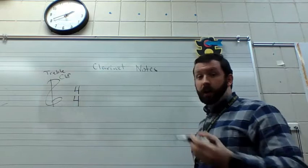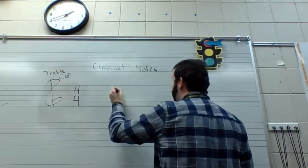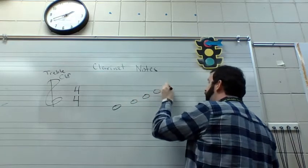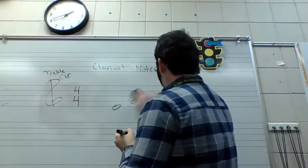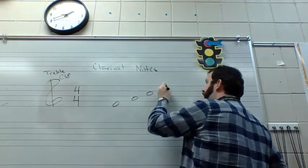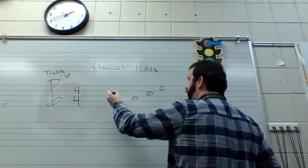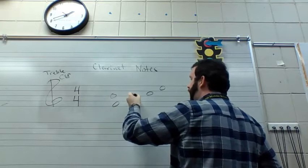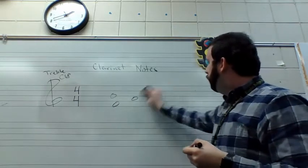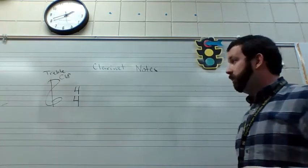Now, we can place our notes on either lines of the staff or on spaces of the staff. If it's on a line, that means the line goes through the center of the note. If it's on a space, the note fits neatly between two lines. We have a couple tricks to remember the lines and the spaces of the staff.